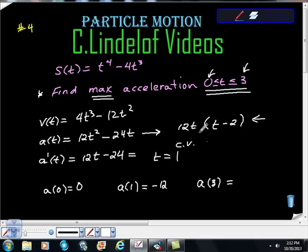And a of 3, I'm going to plug that in up here. 3 minus 2 is 1. 12 times 3 is 36, 36 times 1 is 36.